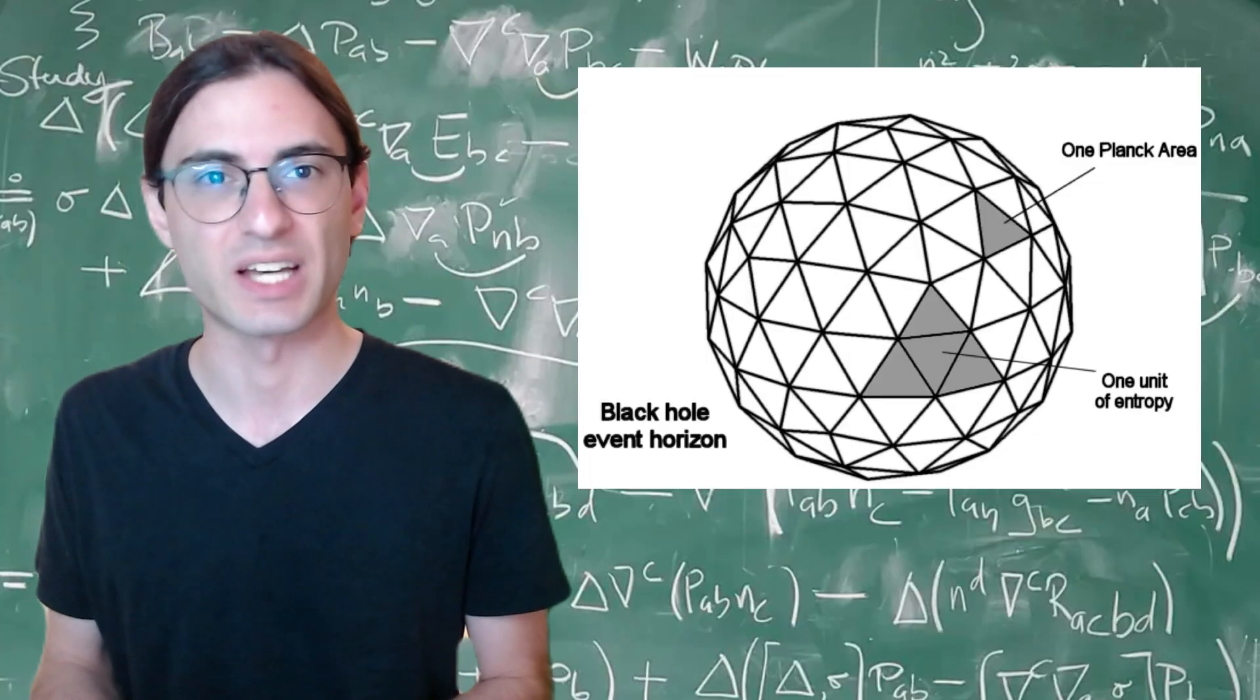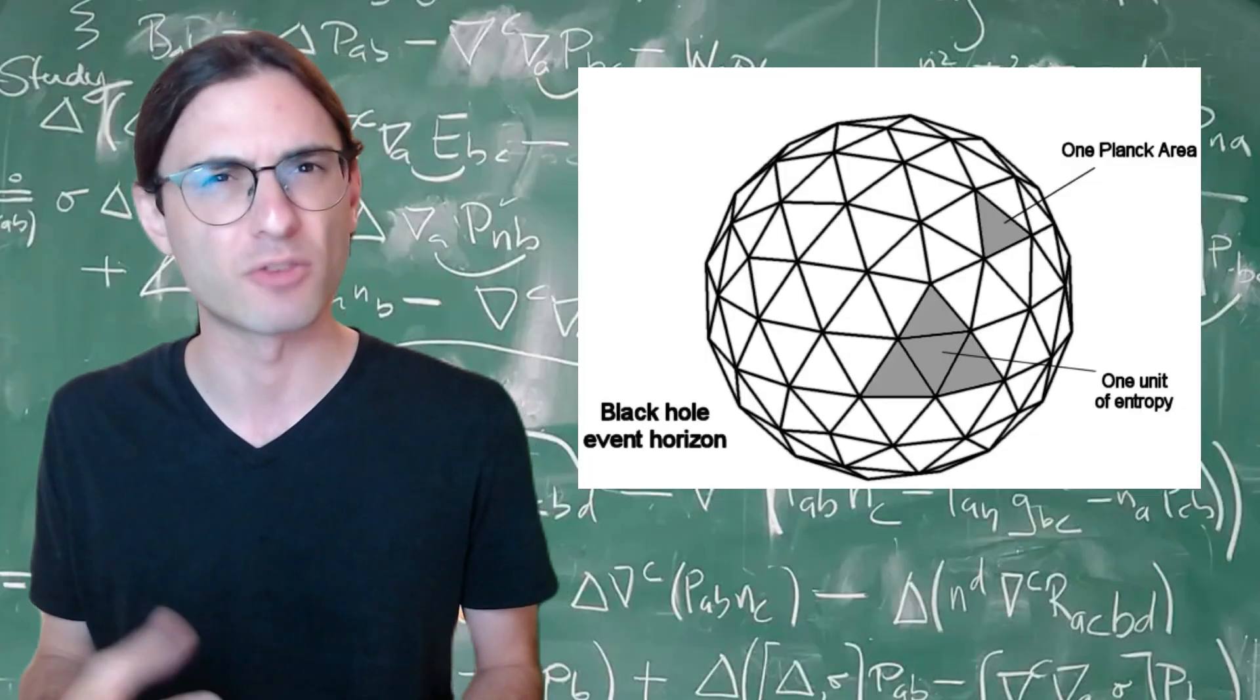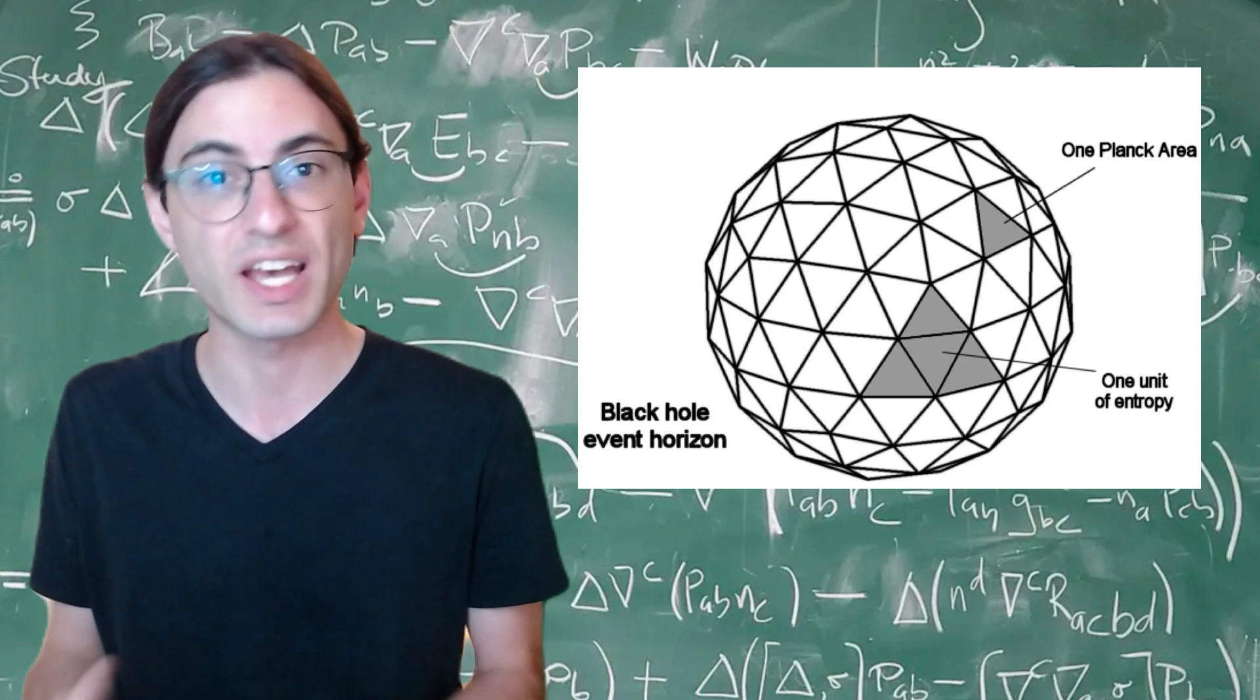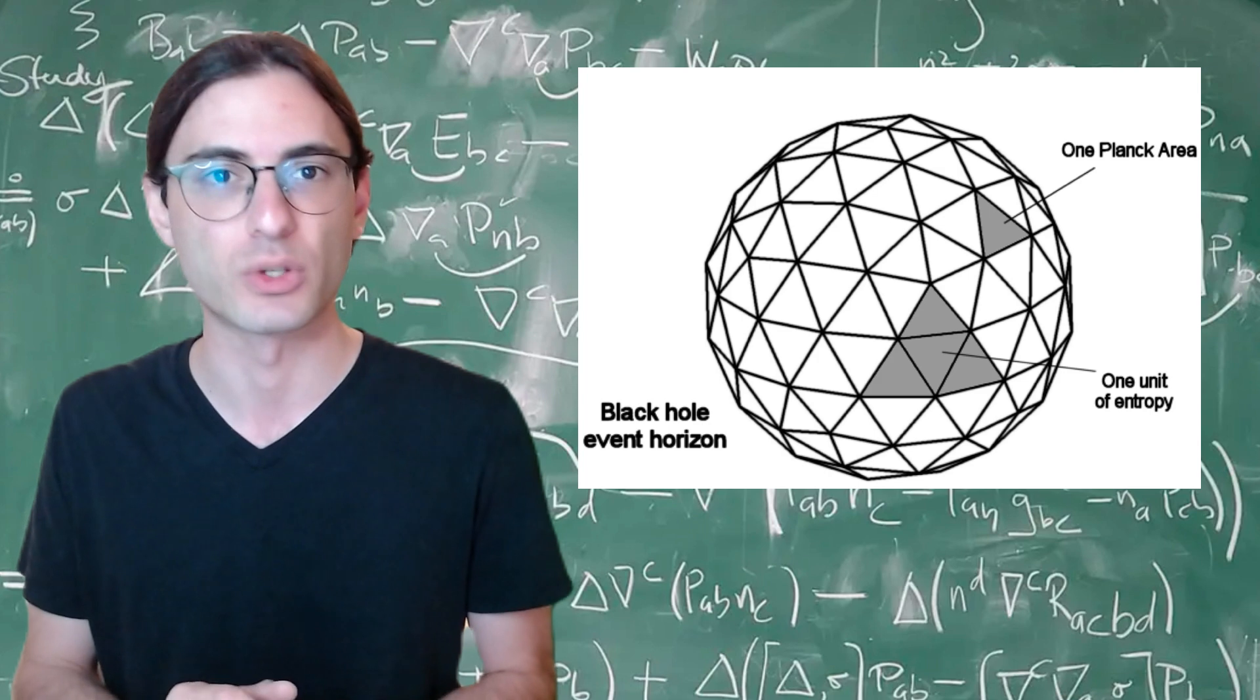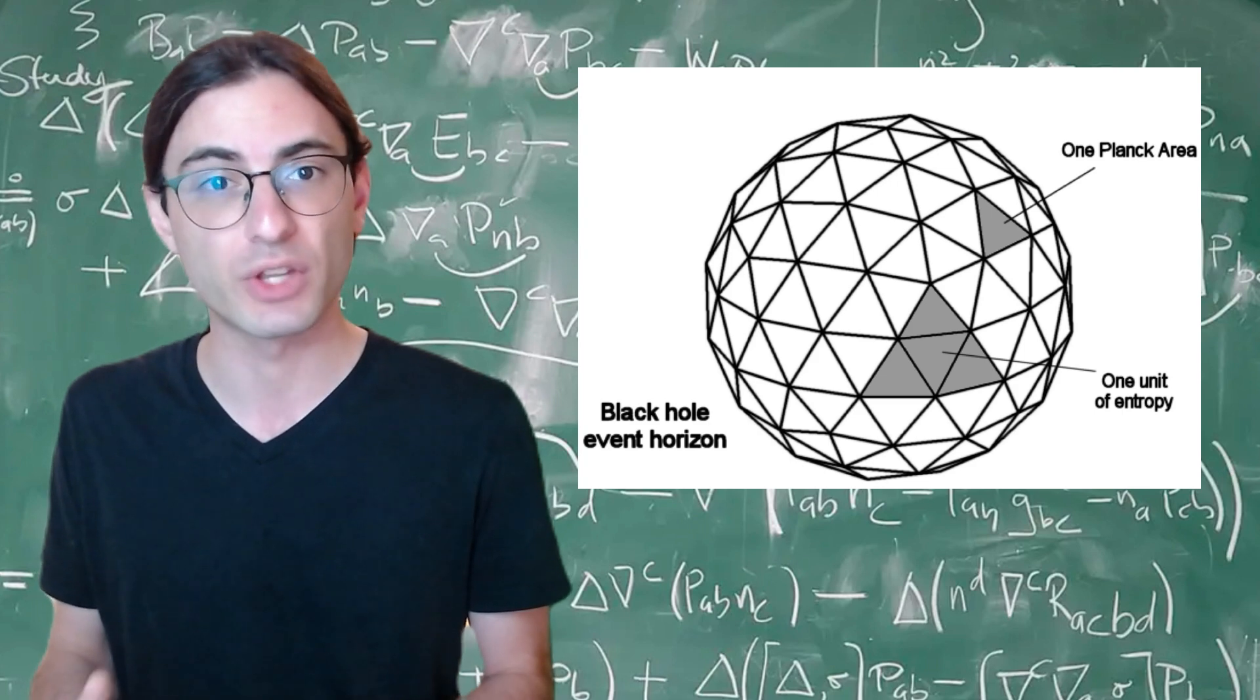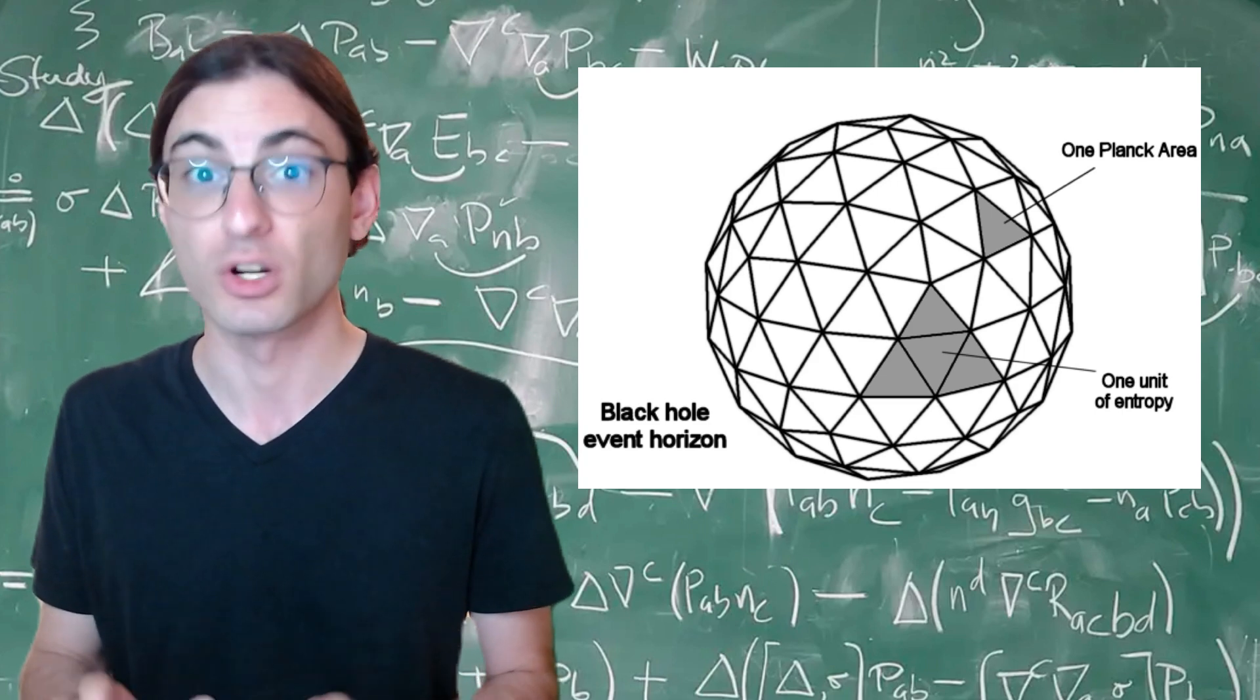Perhaps the first example of this kind is the use of string theory to make sense of the entropy of black holes. In the 70s, Bekenstein conjectured and Hawking proved that the entropy of a black hole is, in natural units of course, the surface area of the black hole divided by 4, a result that follows from the laws of thermodynamics and quantum field theory in curved spacetime, both of which are quite well understood.